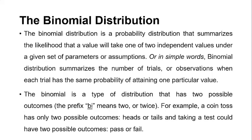The next one is the binomial distribution. The binomial distribution is the probability distribution that summarizes the likelihood that a value will take one of two independent values under a given set of parameters or assumptions. In simple words, binomial distribution summarizes the number of trials or observations when each trial has the same probability of containing one particular value. The binomial is a type of distribution that has two possible outcomes — the prefix 'bi' means two or twice. For example, a coin tossed has two possible outcomes: heads or tails, and taking a test could have two possible outcomes: pass or fail.